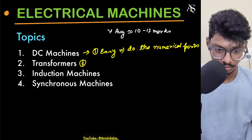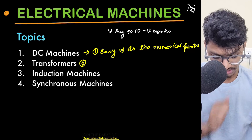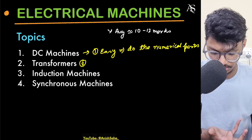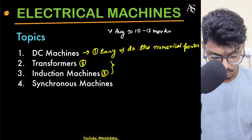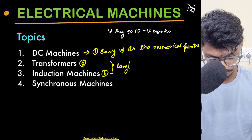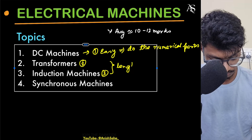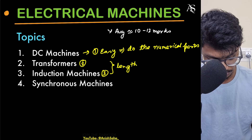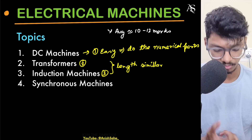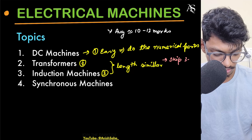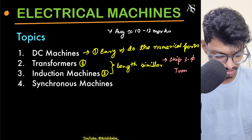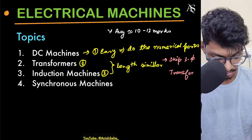Second priority goes to transformers. You can skip the three-phase transformer, as it is a bit difficult and takes a lot of time. Focus on the single-phase transformer. DC machines are the easiest and should be finished first, then study transformers, followed by induction machines. The length and time required for transformers and induction machines are similar.